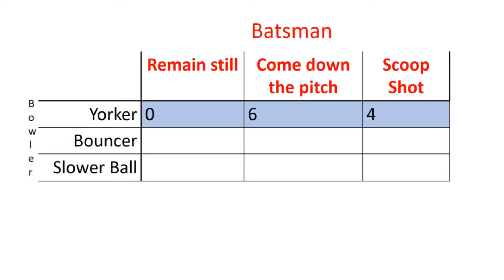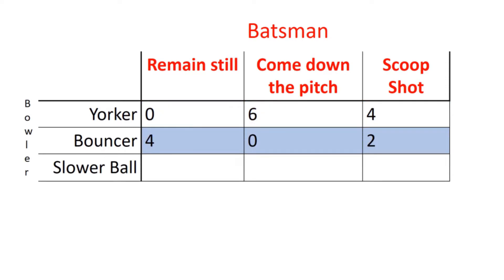When the bowler bowls a Yorker, if the batsman stays still it's hard and he will likely not score. If he comes down the pitch it's also difficult, but if he plays a scoop shot the batsman can prevent the ball bouncing, making it easier — scoring a six or four respectively. When the bowler bowls a bouncer, staying still can be profitable leading to a four; however, coming down the pitch makes it very difficult to score, hence zero. The scoop is hard to play effectively from a bouncer, so the expected outcome is two.